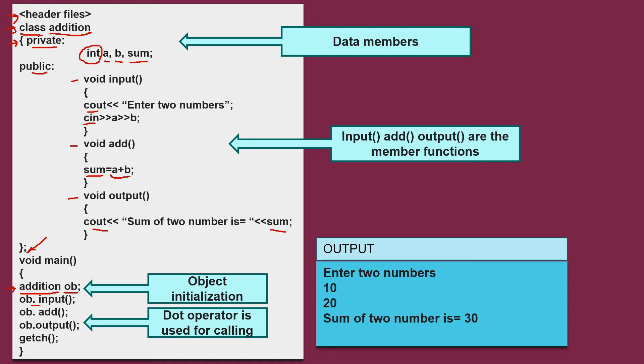Now, here we are calling your all three functions. With the help of output, we will see how they are been invoked. Now, when ob dot input is called, it will call input function. Enter two numbers is been printed and the user has given two values 10 and 20. Then ob dot add is called where the sum of 10 and 20 is done and stored in the sum variable.